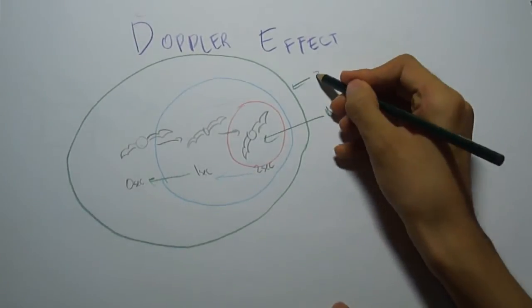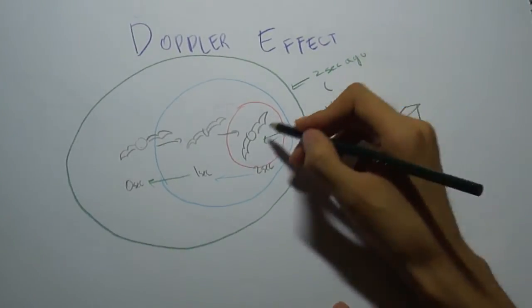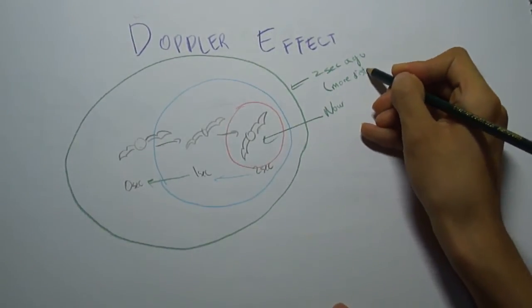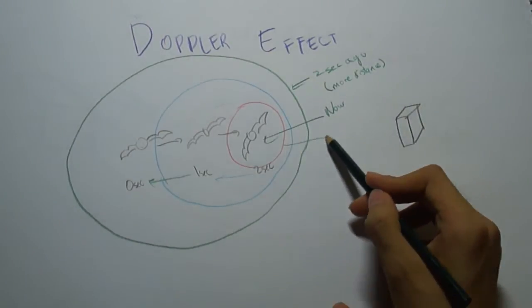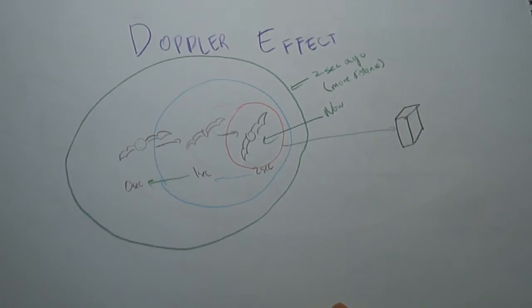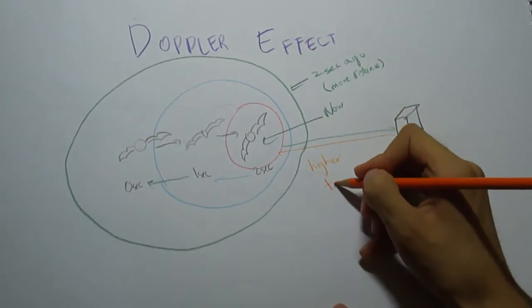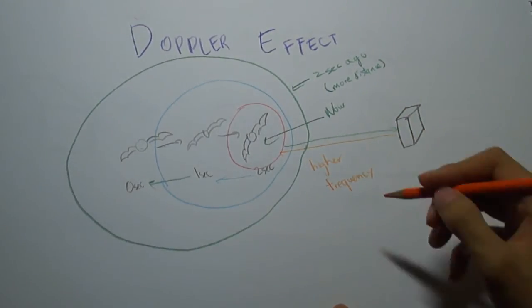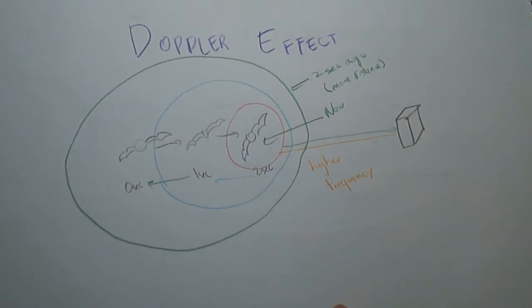When an echolocating bat approaches a target, its outgoing sounds return as echoes, which are Doppler shifted upward in frequency. In certain species of bats which produce constant frequency echolocation calls, the bats compensate for the Doppler shift by lowering their call frequency as they approach a target.